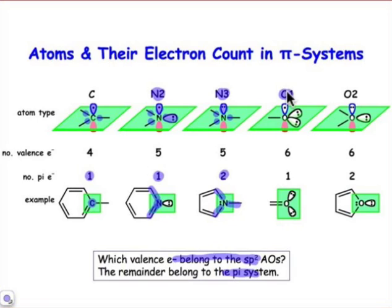Oxygen can be singly connected as in a carbonyl, and it will have two lone pairs as part of the sp2 hybridized orbitals, and one sigma bond. So one electron will go in the sigma bond, and then four electrons will go in those non-bonding orbitals that are part of the sp2 system. Five of the six electrons in O1 will be part of the sp2 system, and that leaves one electron left over for the pi system. O1 contributes one electron to the pi system.